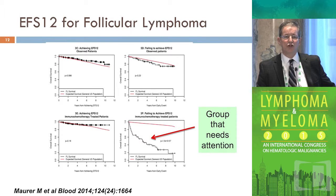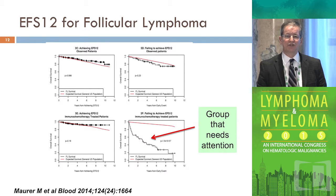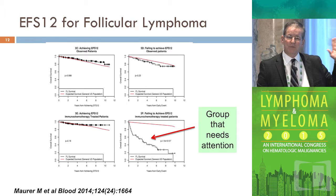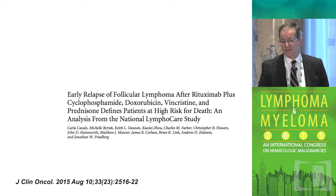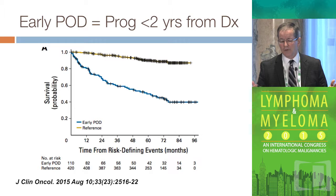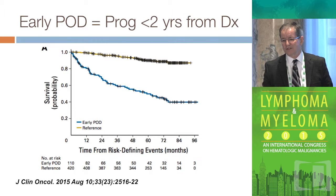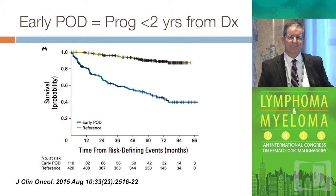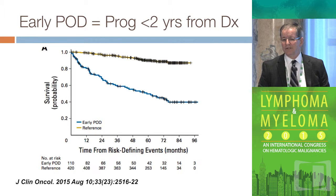EFS-12 is a very important new biomarker. It's going to be built into our trials because we no longer have to wait 10 to 15 years to see how patients do — we can look at EFS-12 with a new agent, and that will predict long-term survival. The National LymphCare Study shows a similar thing using the two-year mark: patients who progressed in the first two years after R-CHOP-like treatment did much worse than those who did not progress. These are powerfully easy biomarkers to use.